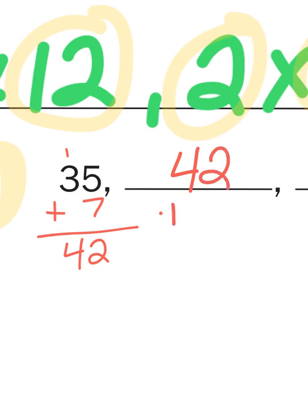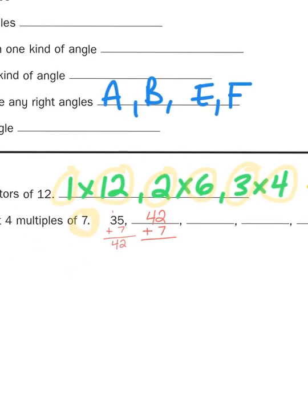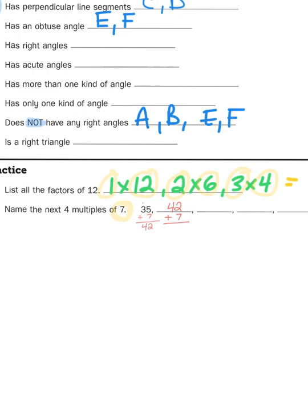And then I would add 7 to 42 to get my next multiple, which I'll let you do the arithmetic for that. So skip counting by 7s, not by 5s.